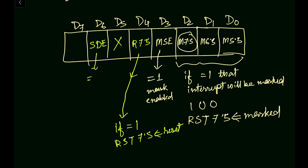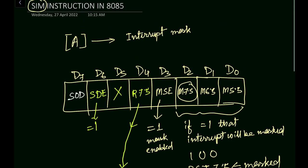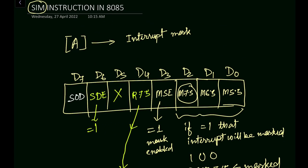If this data is equal to 1, then the Serial Output Data, then SOD, Serial Output Data will be occurring. Then if this value is equal to 1, then only SOD, Serial Output Data, that means data will be output. So these are the 8 bits that are used in the SIM instruction.